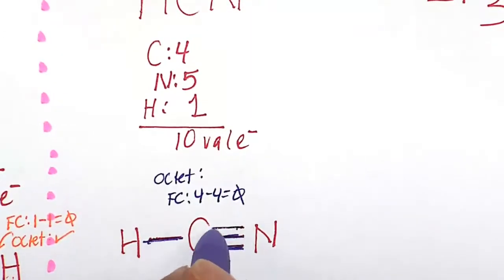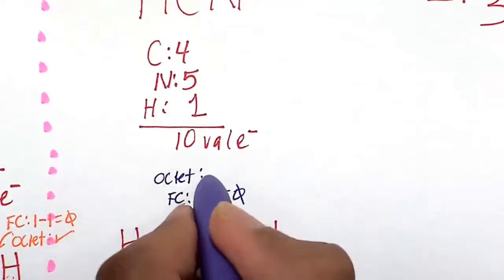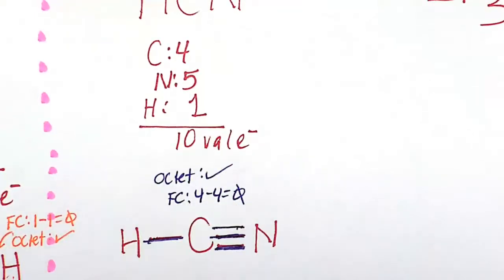So the octet rule for carbon, counting 1, 2, 3, 4, 5, 6, 7, 8. Here we count everything individually. So the octet rule is good.